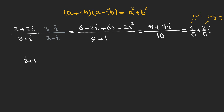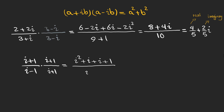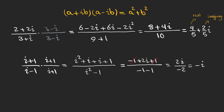Now let's look at another example: (i plus one) over (i minus one). Multiplying by the conjugate gives a complex number in the numerator and a real number in the denominator. These cancel out and we are left with minus i.